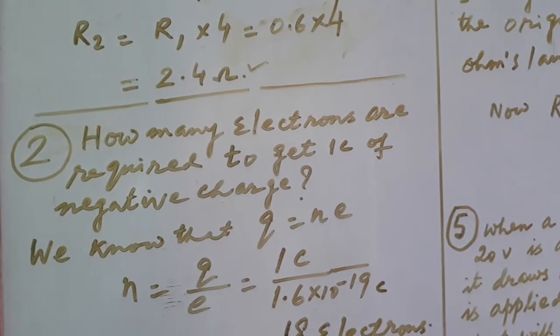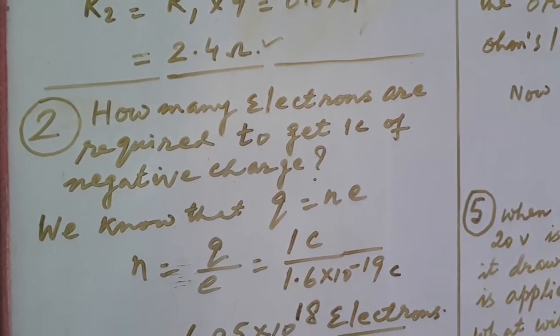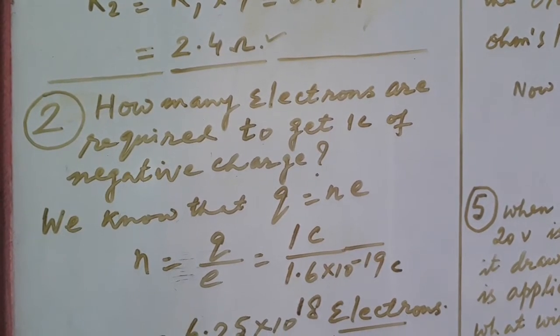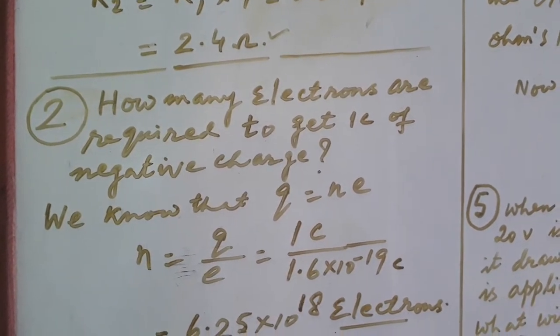Now look at question number 2: how many electrons are required to get 1 coulomb of negative charge?